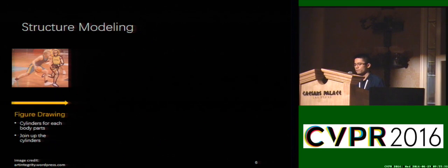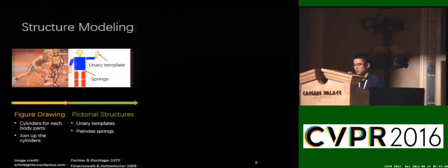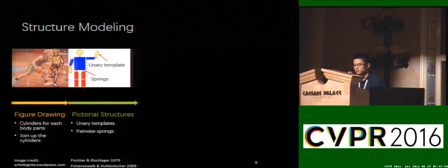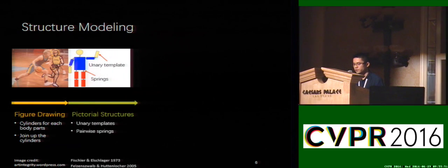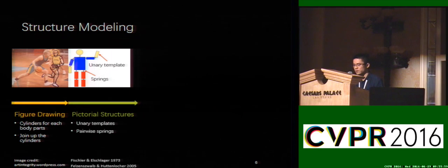To tackle this problem, a basic question is how to represent the highly articulated human body. Actually, in figure drawing, artists draw a cylinder for each body part and then join up the cylinders to construct the whole body. Similarly, pictorial structures use two-dimensional part templates to match body parts and encode the spatial relationships between body parts by springs.